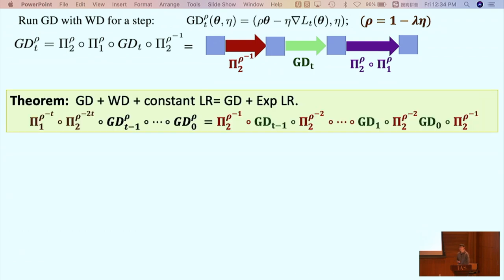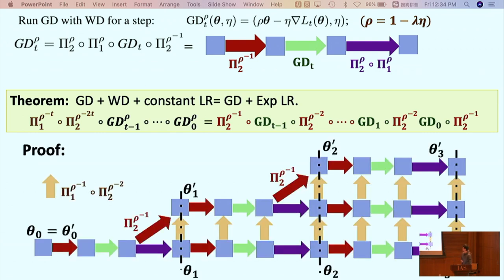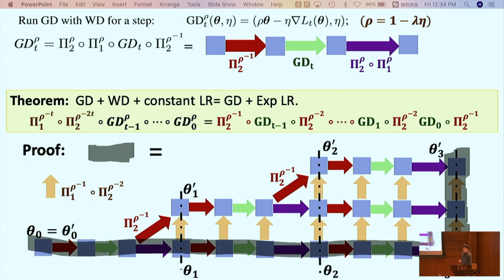Now we are ready to prove the main theorem in the case of momentum-free SGD. The proof is by picture, it's actually quite simple. Because of the commutative property, the left-hand side of this equation is basically this black trajectory, which means you'll first do all the GD update with weight decay. The pink path is the right-hand side, which is the desired trajectory. Here we use the property that the composition of purple and yellow map is a red map, which is a scaling.